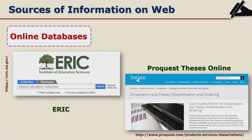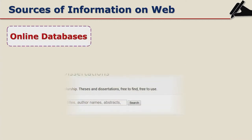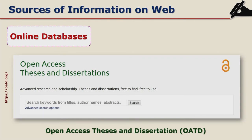There are online databases like ERIC or ProQuest Thesis Online which give you full-text theses online. There are also other online databases that provide full-text theses from Britain, the USA, and even from India through Shodha Ganga. This is an example — OATD, Open Access Theses and Dissertations — a site where you can get full-text open access theses and dissertations, which is very helpful for researchers.